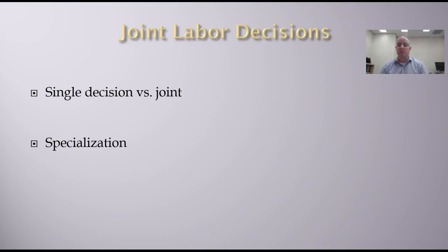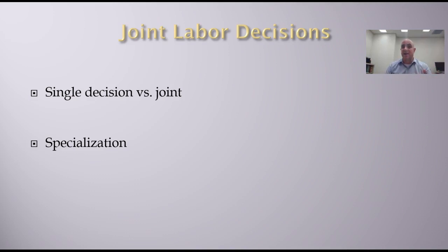So far we have looked at labor supply and the decision to work as a single decision maker — how much do you need to make to maximize your utility, how much should you work? But in reality, for those who are married and with children, the decisions are joint decisions. When you're married, it's not my money and my spouse's money — it's our money. You need to consider that household's income and make joint decisions.